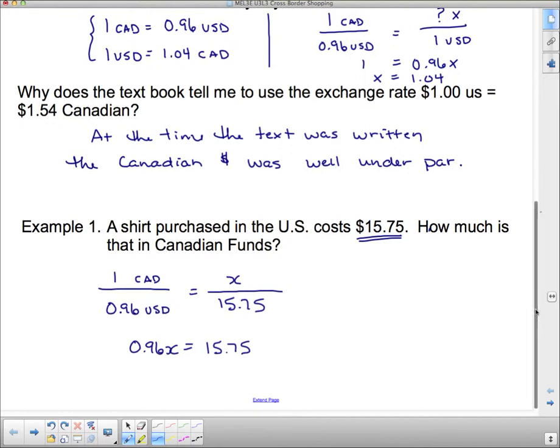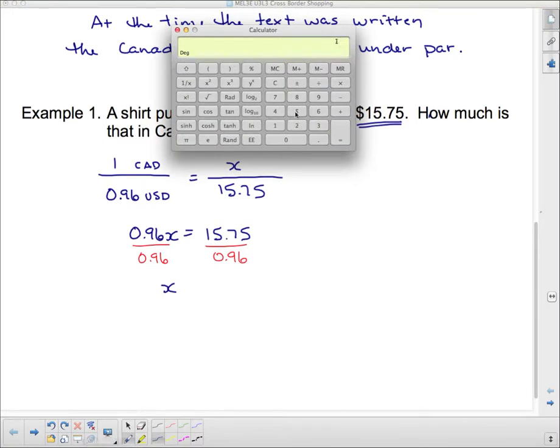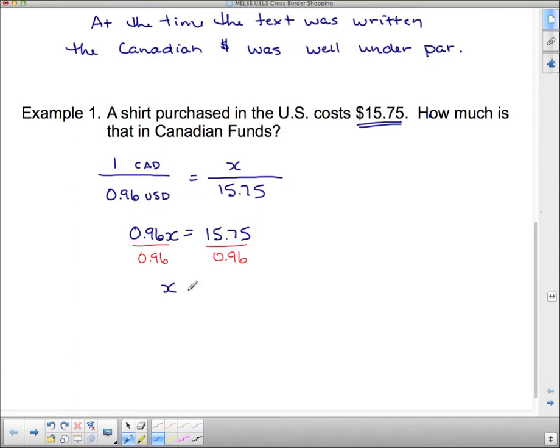And then, we have to divide both sides by 0.96. And this is going to be the same process every time. First, we cross multiply. And then, we divide by whatever is with the X. So, we get the X completely by itself. And let's pull up my calculator here. 15.75 divided by 0.96 is 16.41.